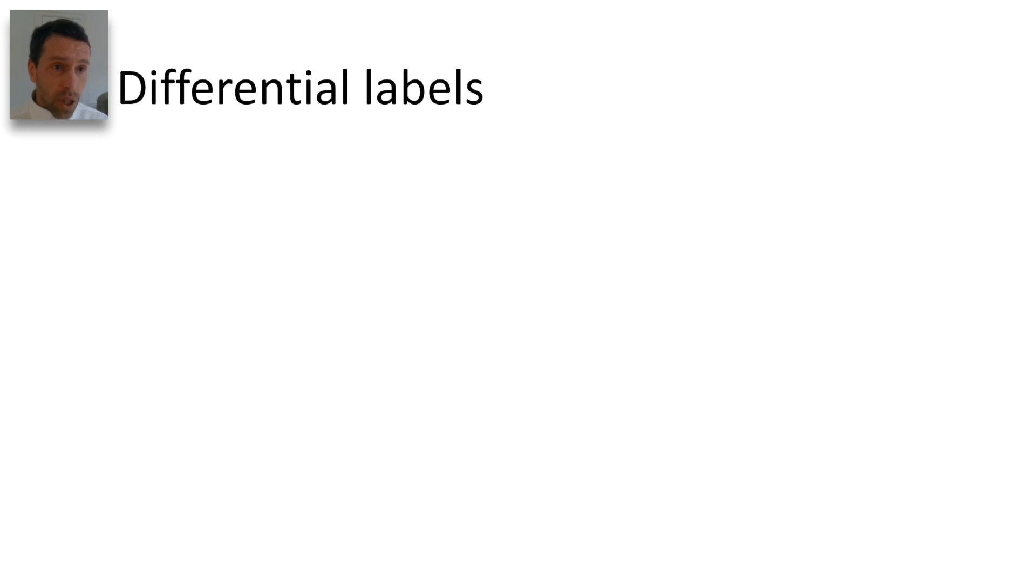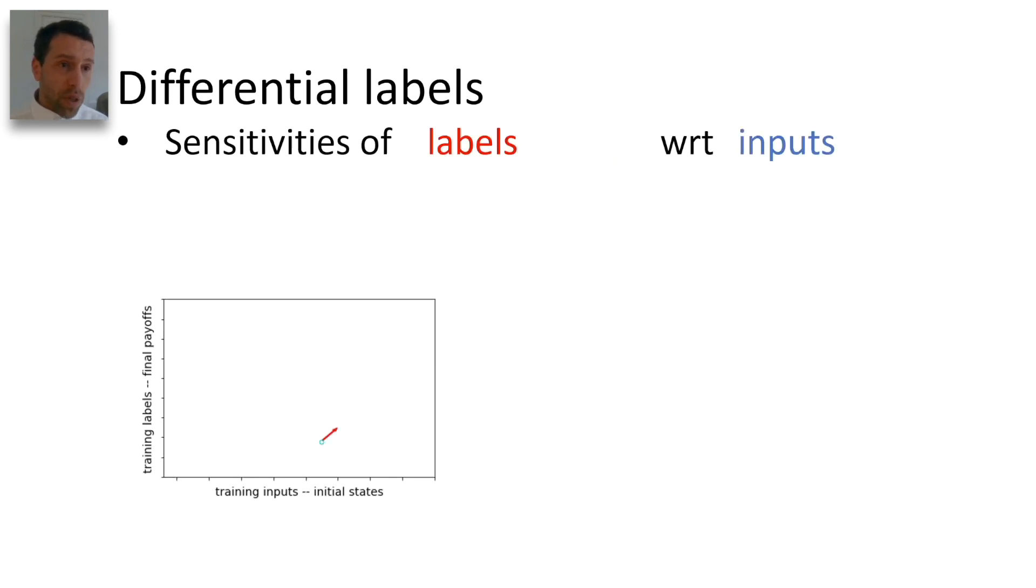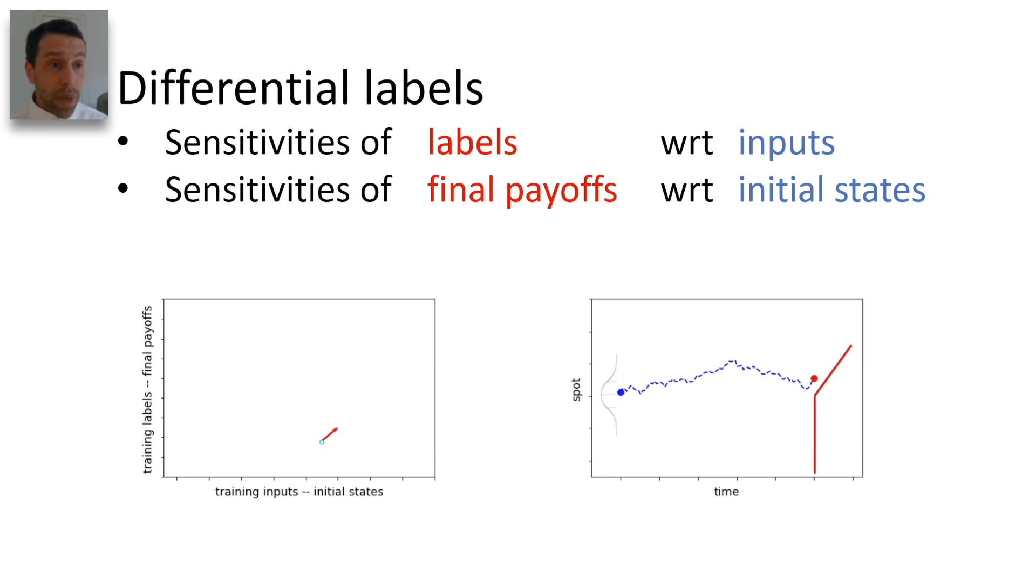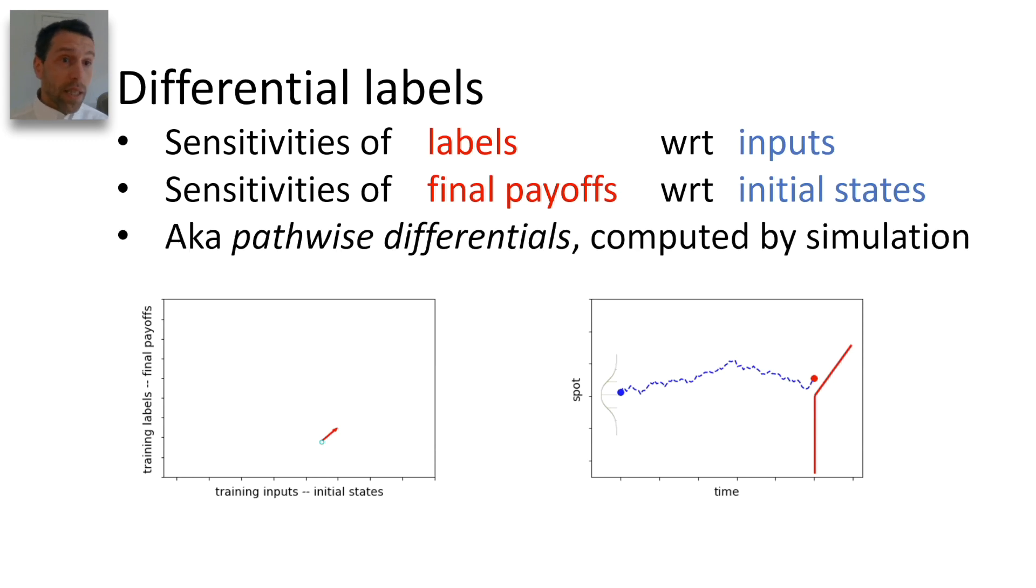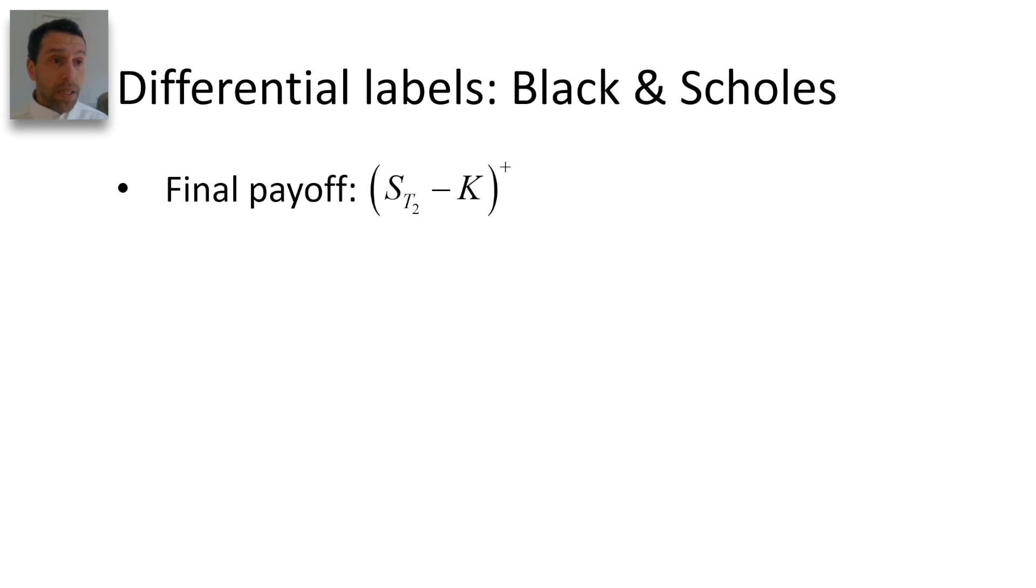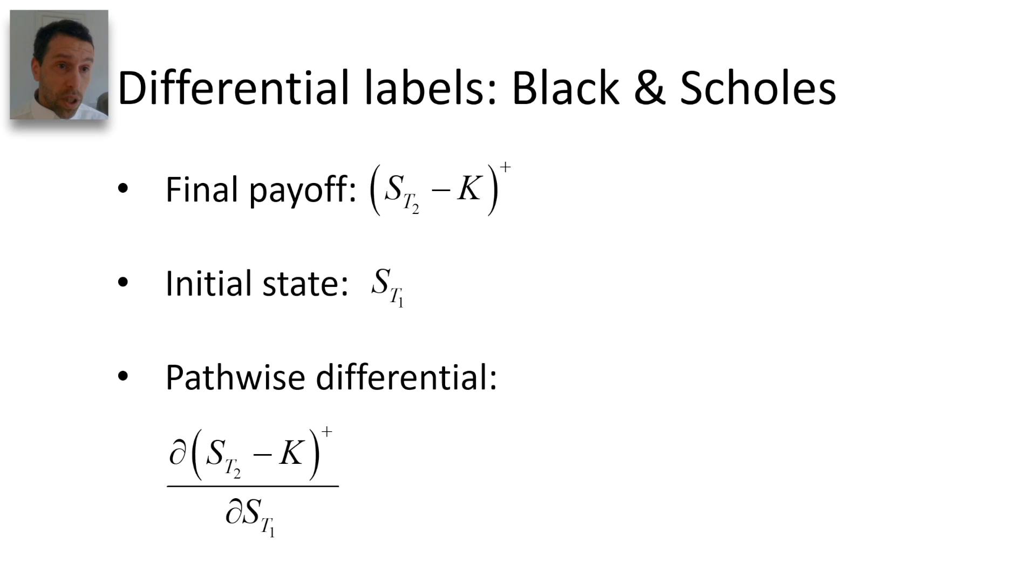How about differential labels? They are sensitivities of labels with respect to inputs, that is, sensitivities of final payoffs with respect to initial states, and they are computed in the simulation engine. In Black and Scholes, the final payoff is (ST2 - K)+, and the initial state is ST1.